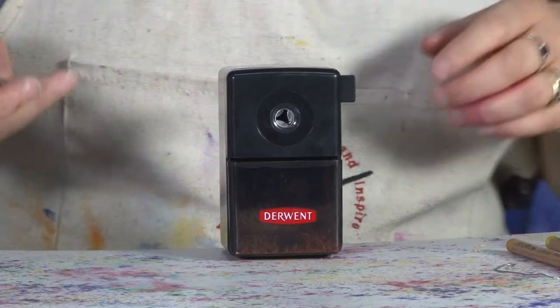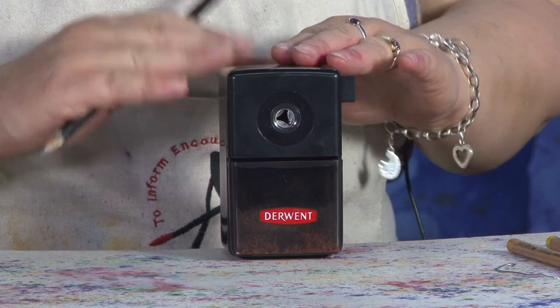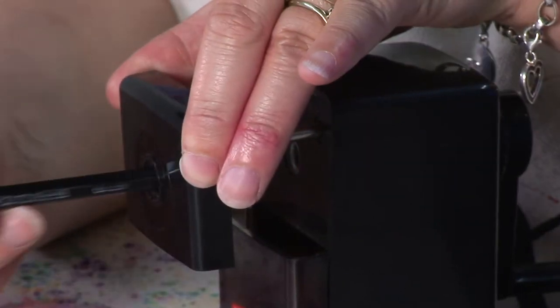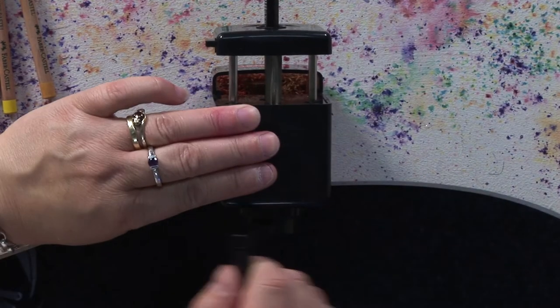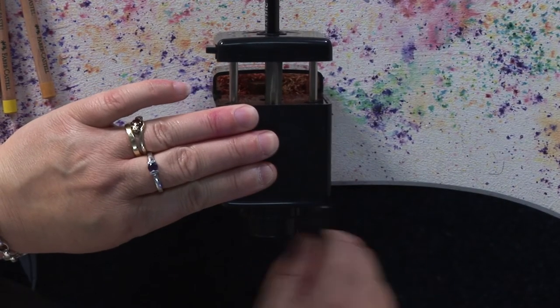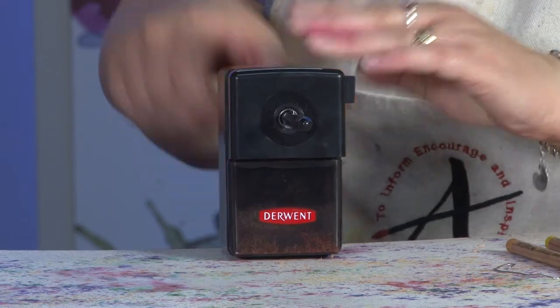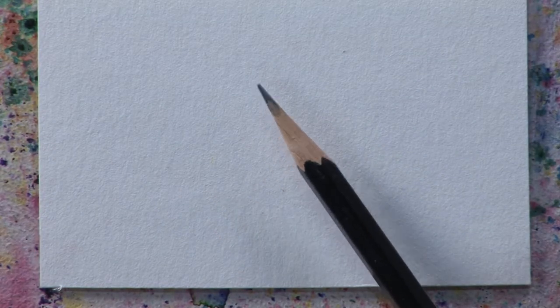If you sharpen a lot of pastel pencils, a tip for maintaining this unit is to sharpen a graphite pencil quite regularly. The graphite will help lubricate and keep the blade sharp. Using a graphite pencil every now and then will help keep this unit in good working order.